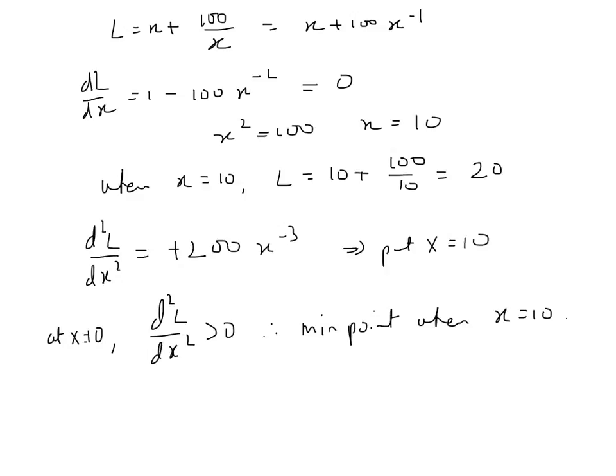So therefore, the fencing that we get when x = 10 and L subsequently equals 20 is, in fact, a minimum point. The minimum length of fencing required is 20 meters.